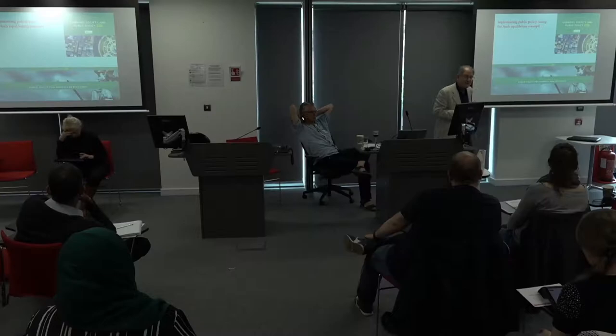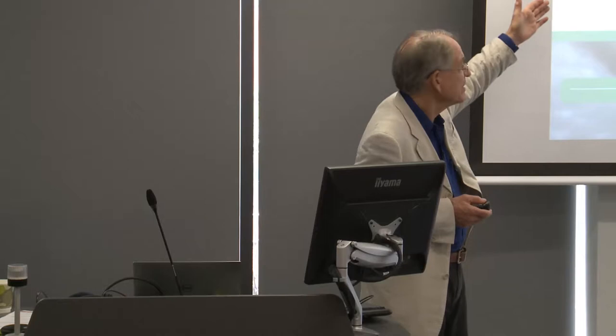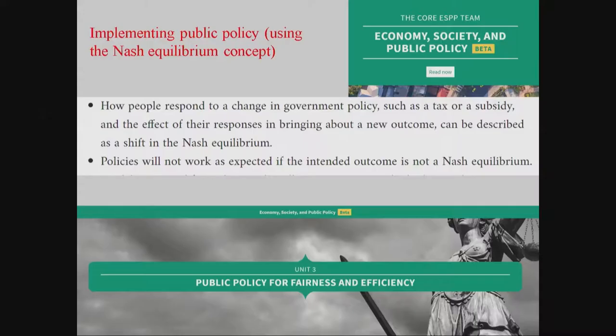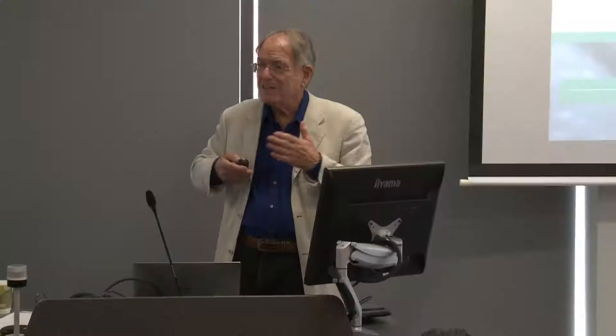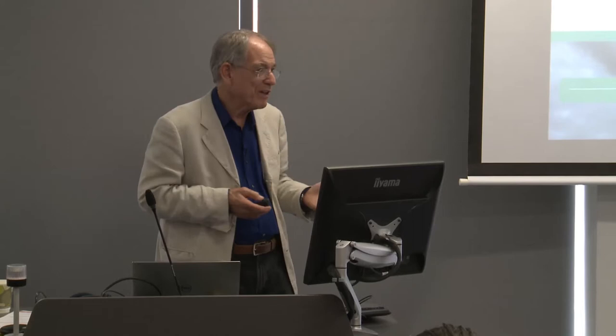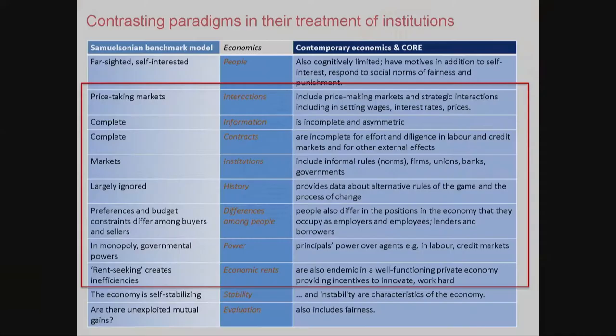We spend a lot of time doing public policy, and we have a foundational theory of public policy summarized by two points. If you have a government policy, how people respond to a change in taxes, subsidies, and so on is going to be important in determining the effect. That can be described by a shift in a Nash equilibrium. Therefore, policies will not work unless the intended outcome is a Nash equilibrium. It's easy to see how forgetting that point leads to mistakes — when you think a government can actually dictate an outcome, when of course the government is simply altering the conditions under which people make their decisions. Virtually all the things on the right side — the CORE paradigm — have something to do with institutions.